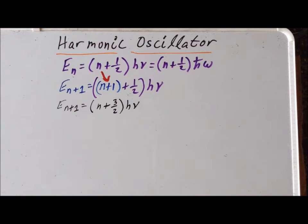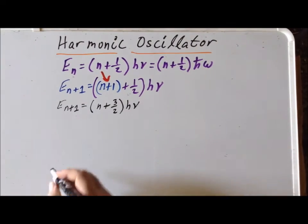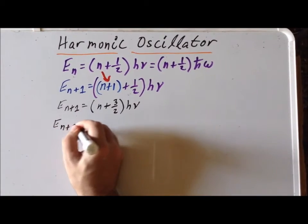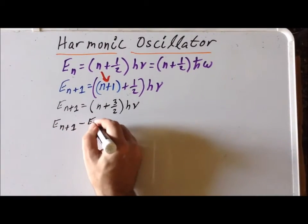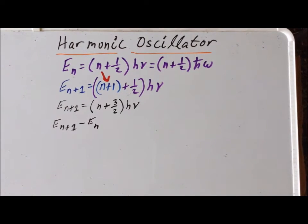But what we want now is the distance between the nth and the nth plus first. So that's simply e sub n plus one minus e sub n, because the next level after n is n plus one. The lowest energy level for the harmonic oscillator is n equals zero, and the n's have to be whole numbers.